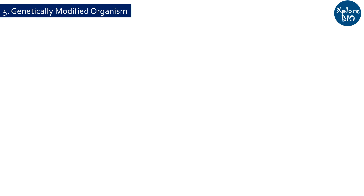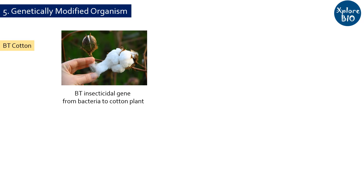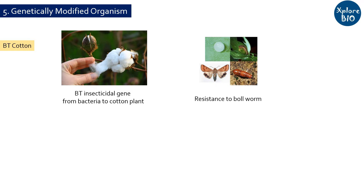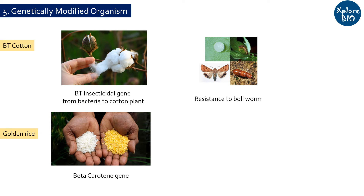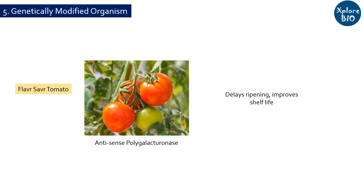Recombinant DNA technology is used to generate genetically modified organisms with desired traits by incorporating genes from different organisms. For example, Bt cotton is genetically modified with a bacterial insecticidal gene, producing insecticidal protein in plants and thus reducing the need for insecticides. Golden rice is a genetically engineered rice to produce beta-carotene, a precursor to vitamin A, to help combat vitamin A deficiency in developing countries. Flavr Savr tomato was engineered using an antisense polygalacturonase gene to have a longer shelf life by reducing the activity of the polygalacturonase enzyme that causes tomatoes to ripen and soften fast.